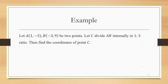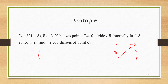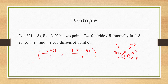Let's do a question based on this. Let A be (1,-3), B be (-3,9), and find the coordinates of point C dividing AB in the ratio 1:3. Writing coordinates of A vertically, coordinates of B vertically, and the ratio horizontally, the coordinates of C are: (1×(-3) + 3×1)/4, (1×9 + 3×(-3))/4 = (0/4, 0/4) = (0,0). So the origin is the required point dividing line segment AB in the ratio 1:3.